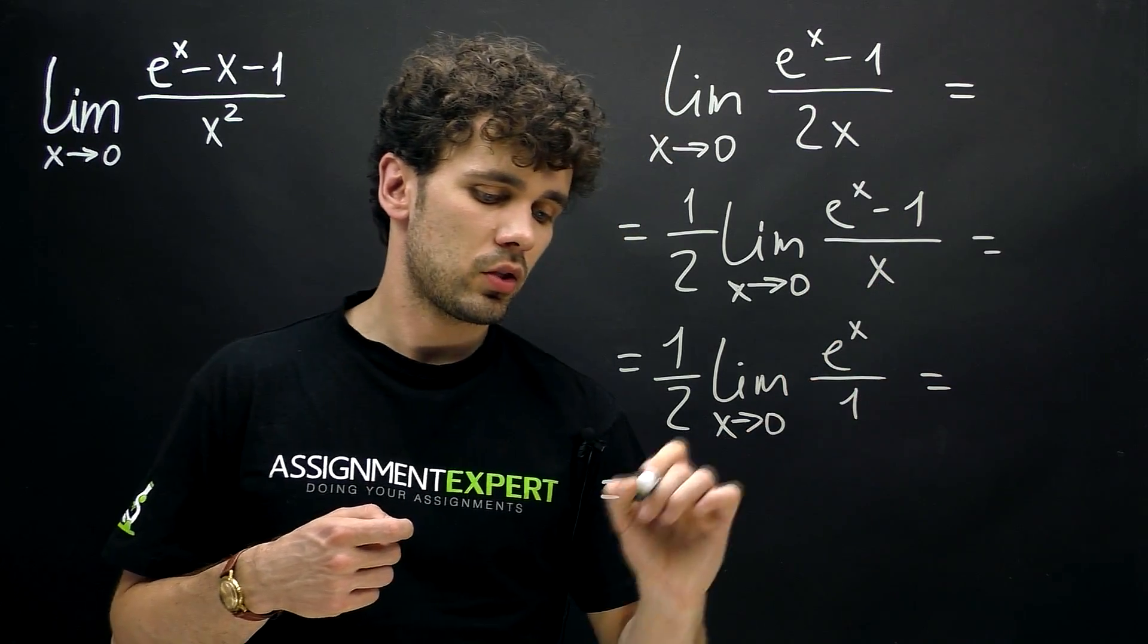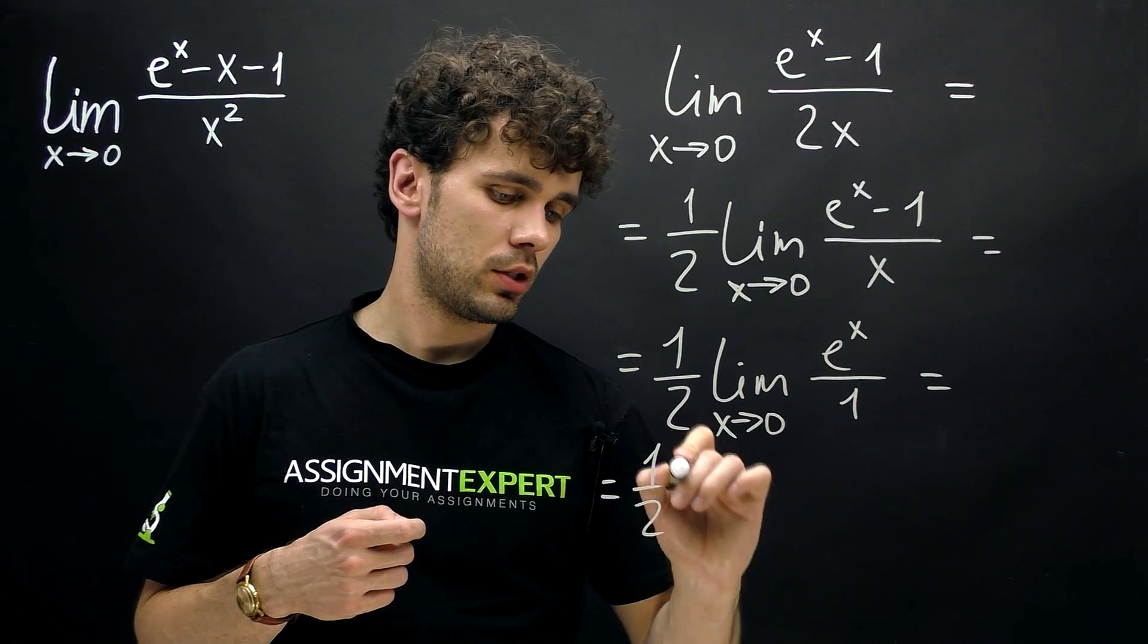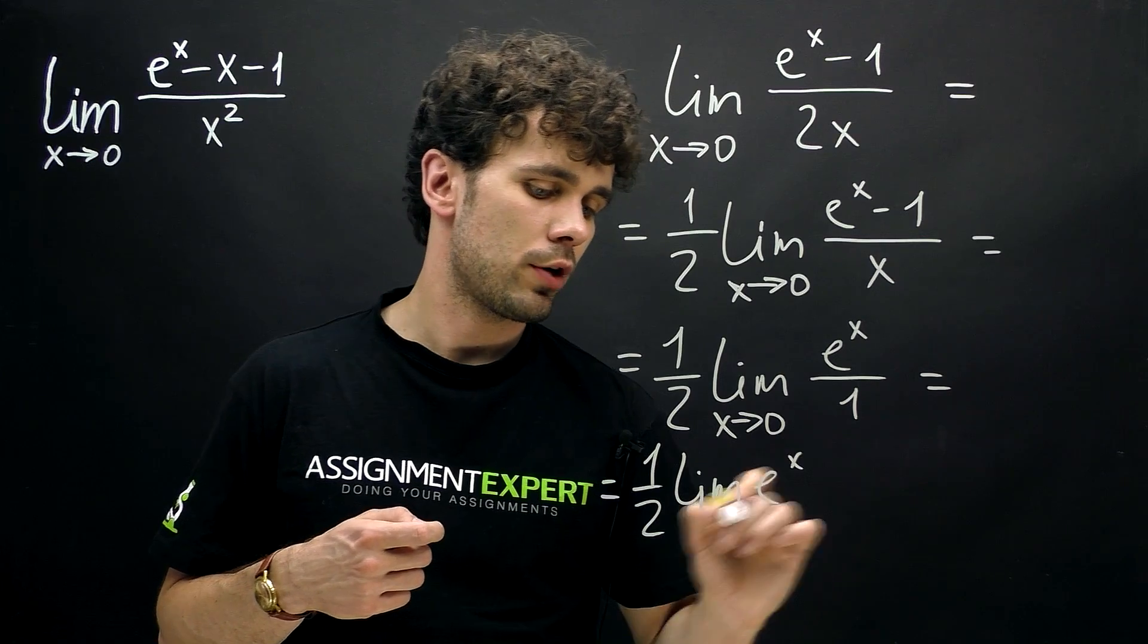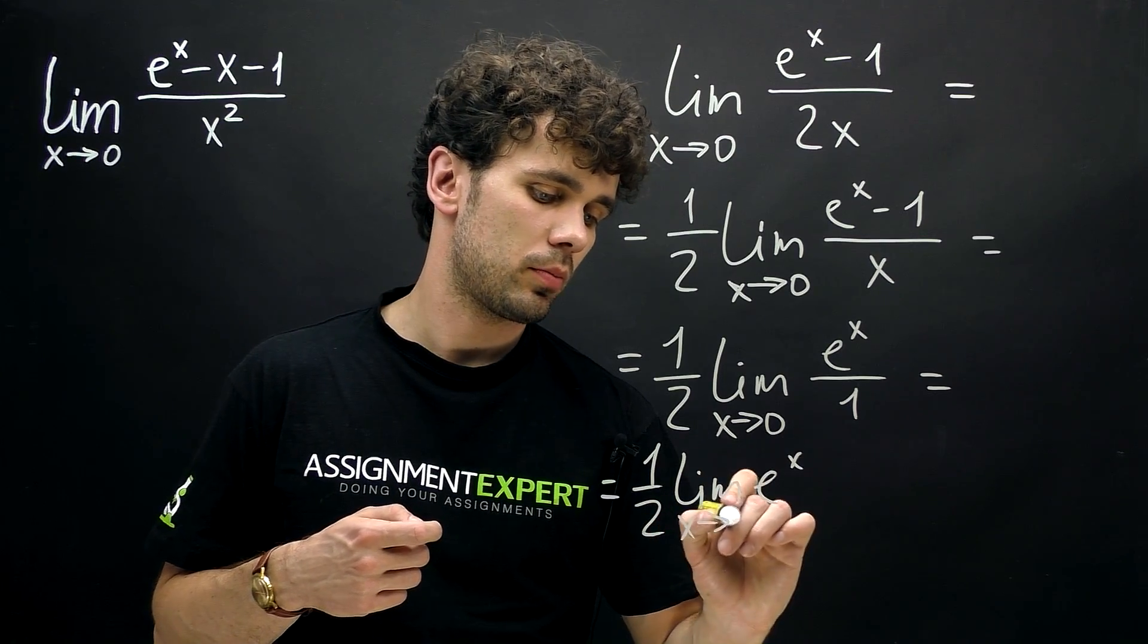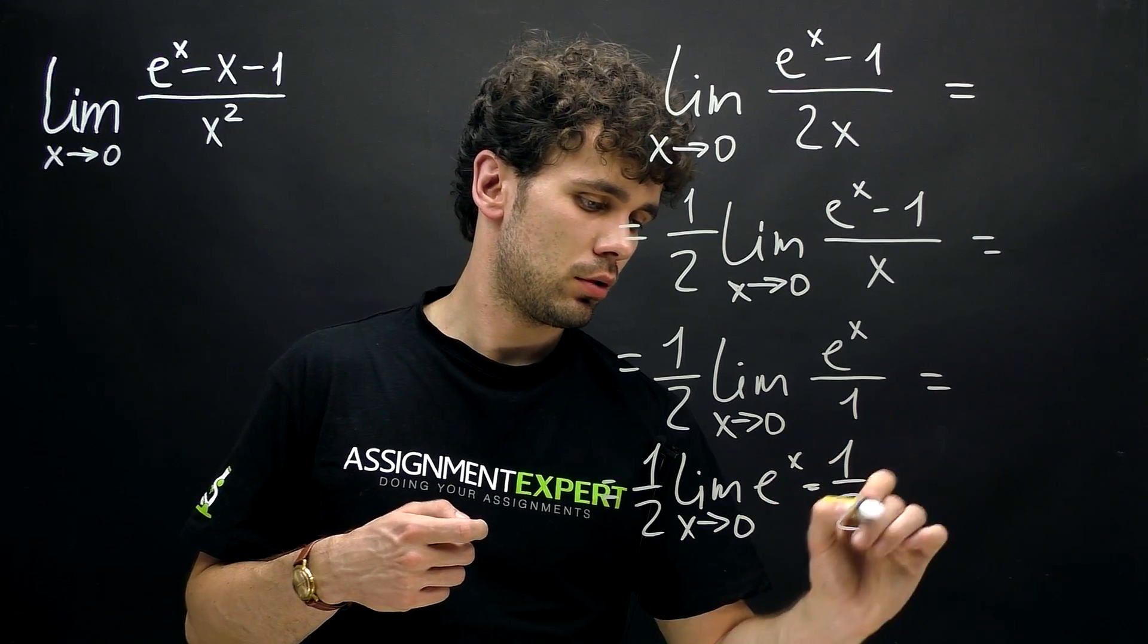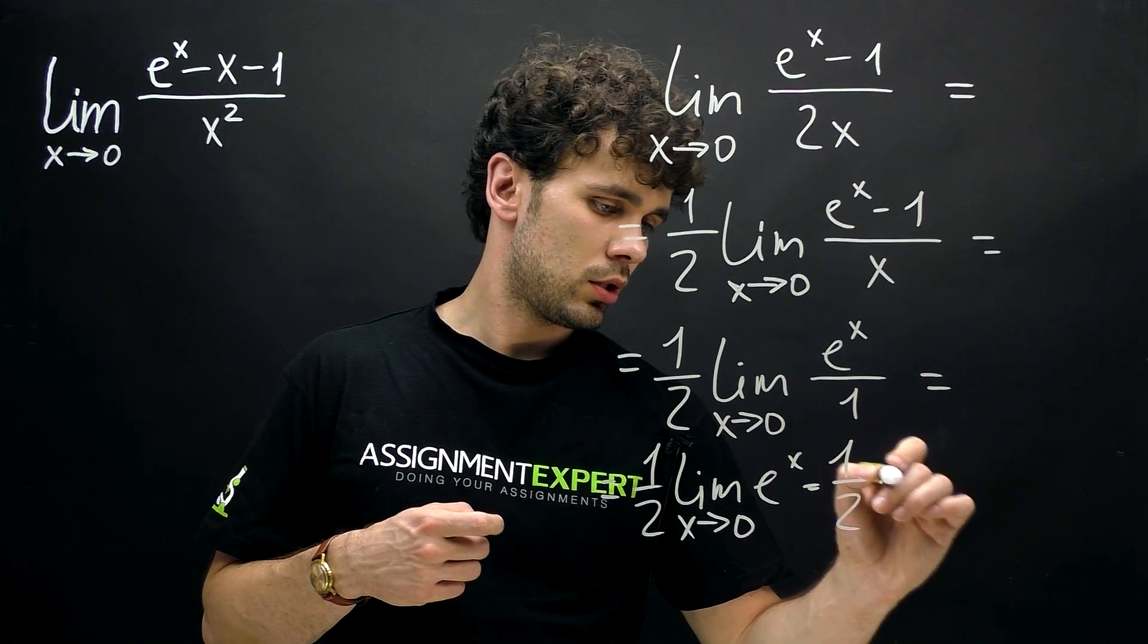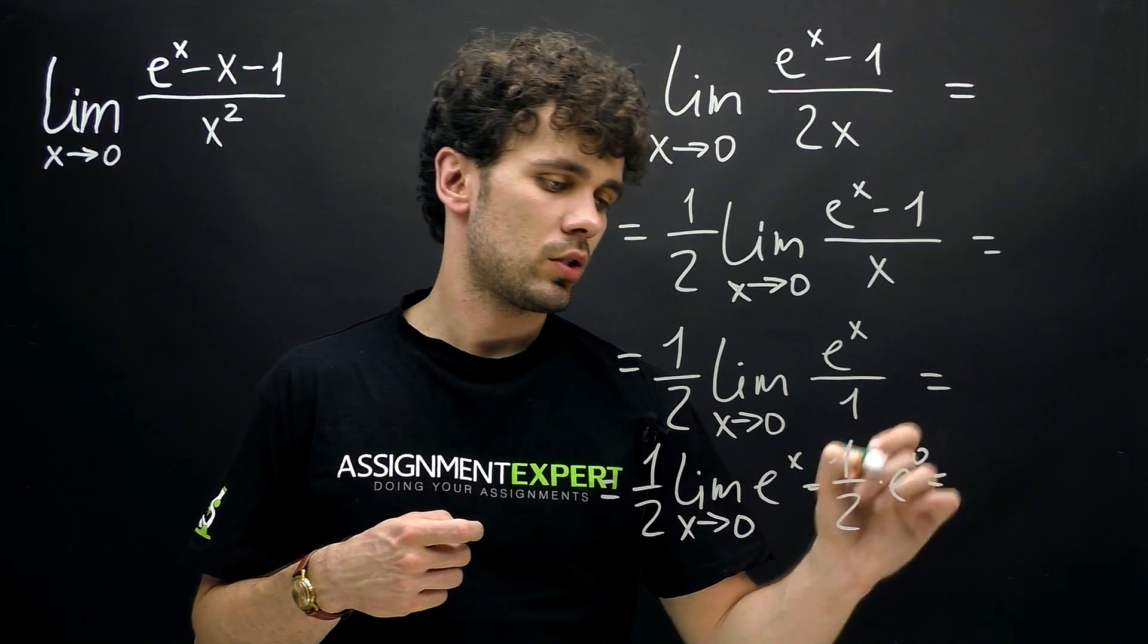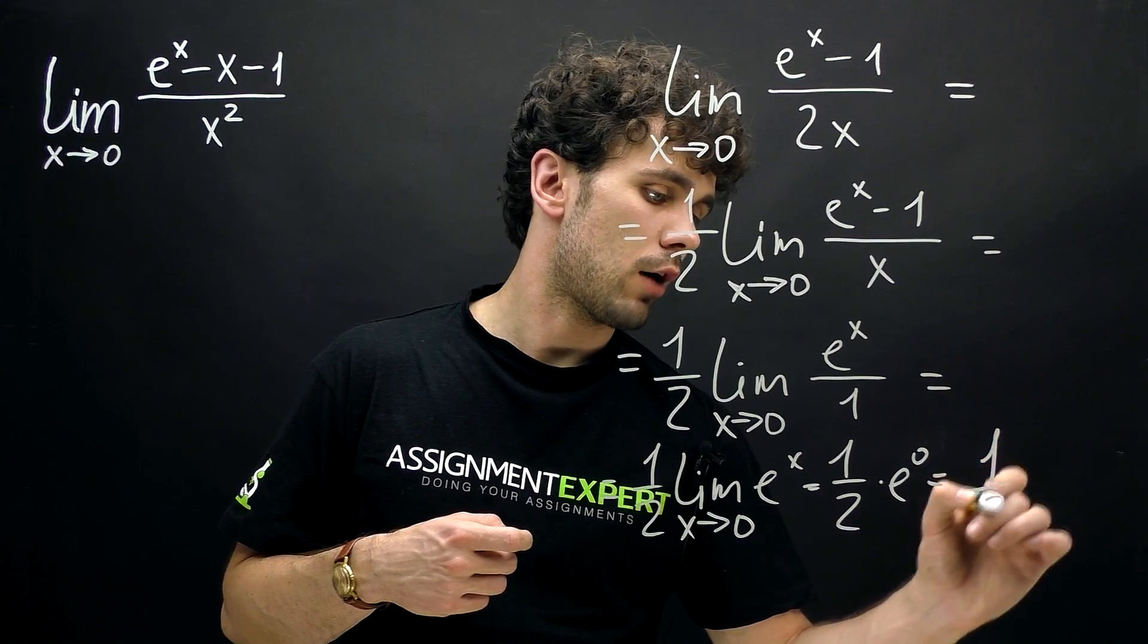And in the denominator we get 1. So basically this is one half times limit of e raised to the x power minus zero. And this is equal to 1. Therefore, the answer is one half.